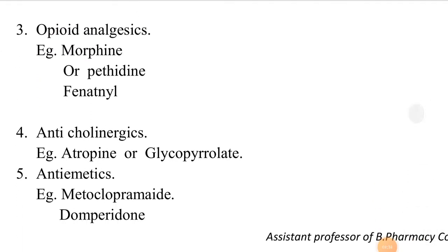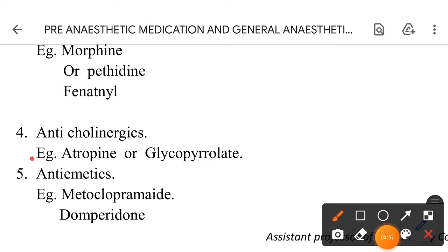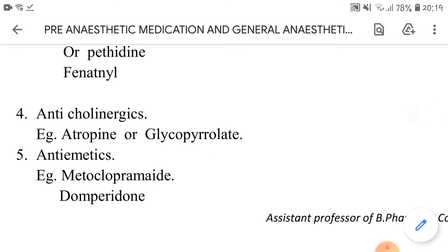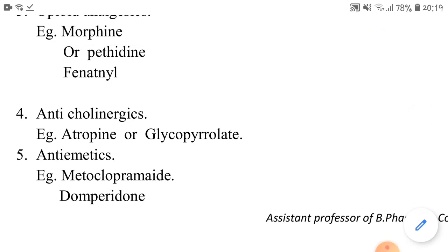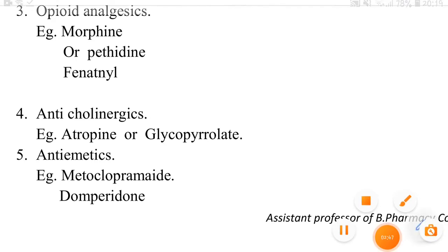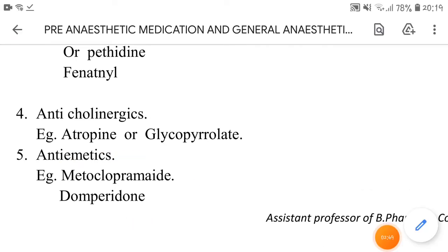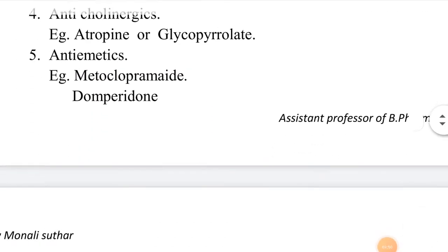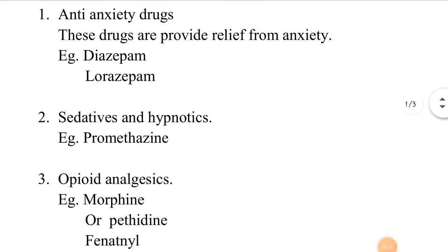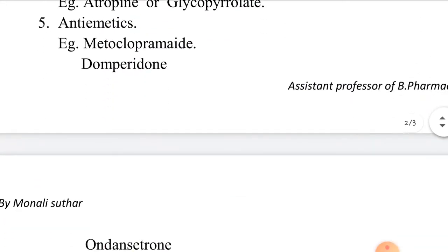Next are anticholinergics — for example, Atropine and Glycopyrrolate. Next are anti-emetics, which prevent vomiting — for example, Metoclopramide and Domperidone. These are pre-anesthetic medications.